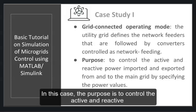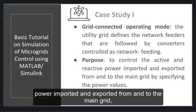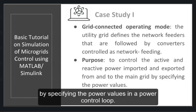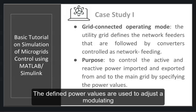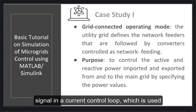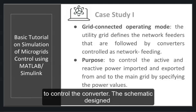In this case, the purpose is to control the active and reactive power imported and exported from and to the main grid by specifying the power values in a power control loop. These defined power values are used to adjust a modulating signal in a current control loop, which is used to control the converter.